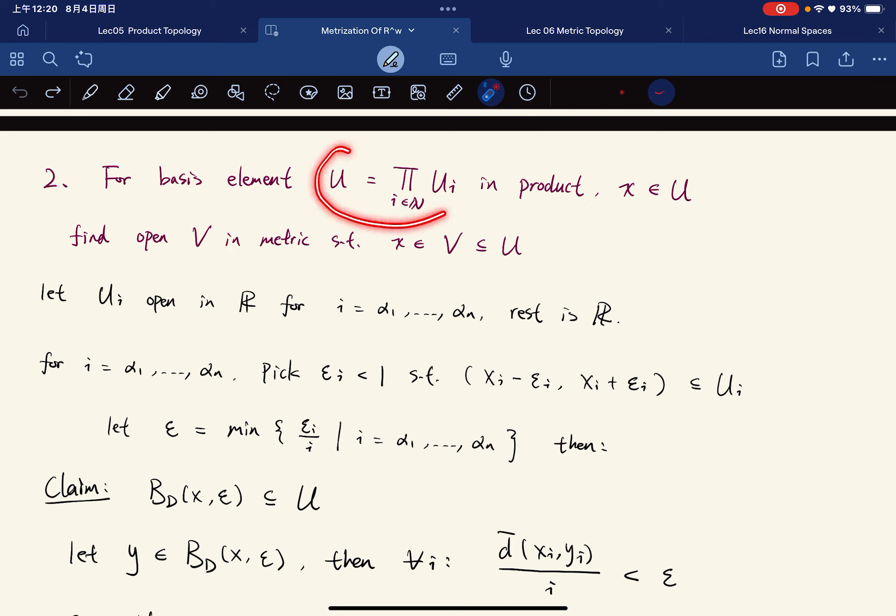Okay, if we've written this, then let the Uᵢ open in R for finitely many indices, and the rest of Uᵢ is equal to the entire space. And we're only going to focus on them.